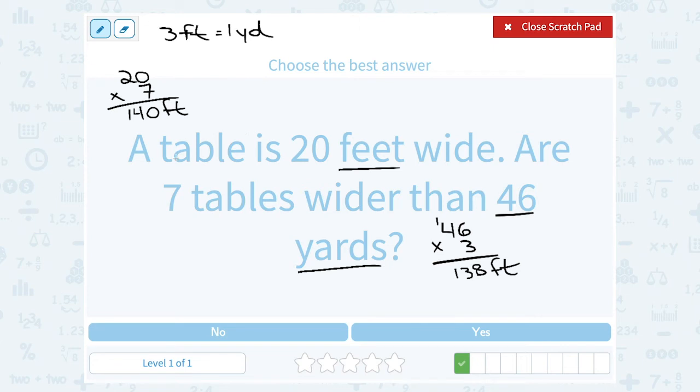So let's look at this. If our 7 tables are a total of 140 feet then yes that is wider than 138 feet or 46 yards.